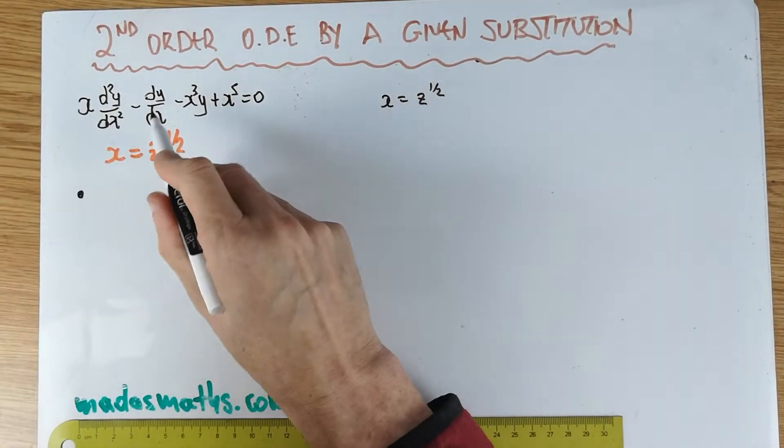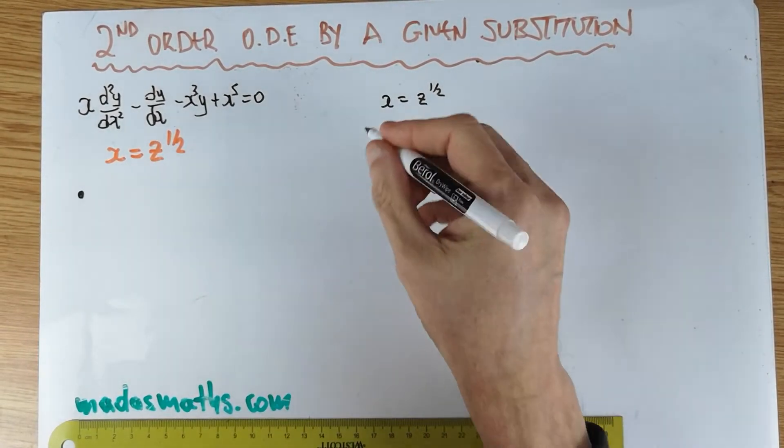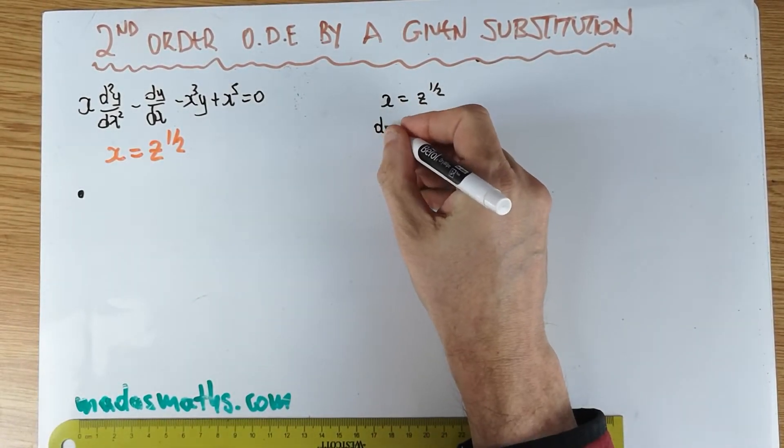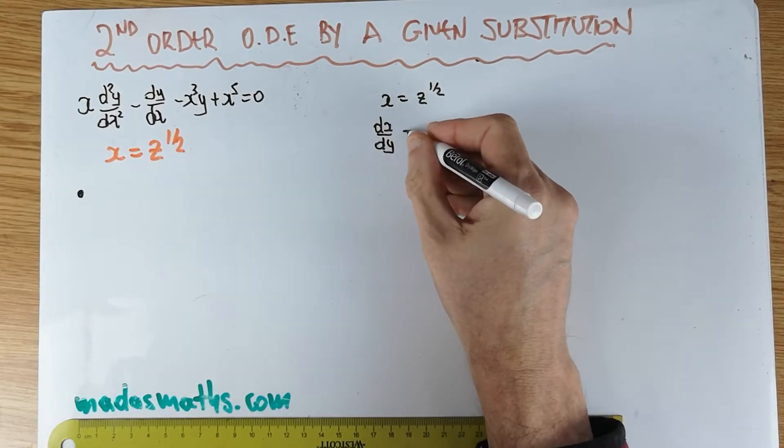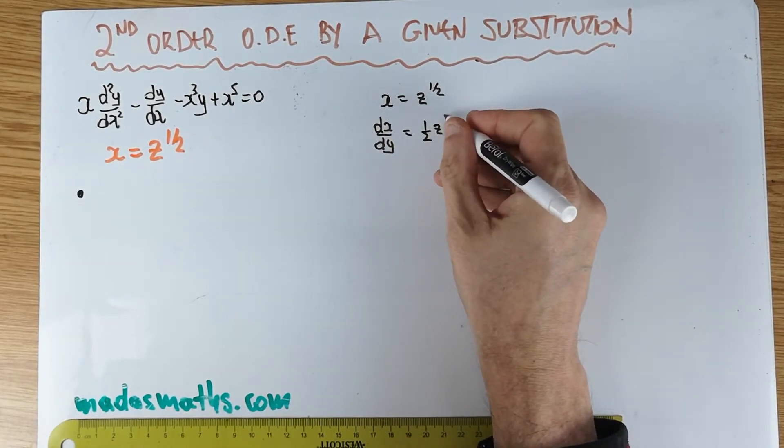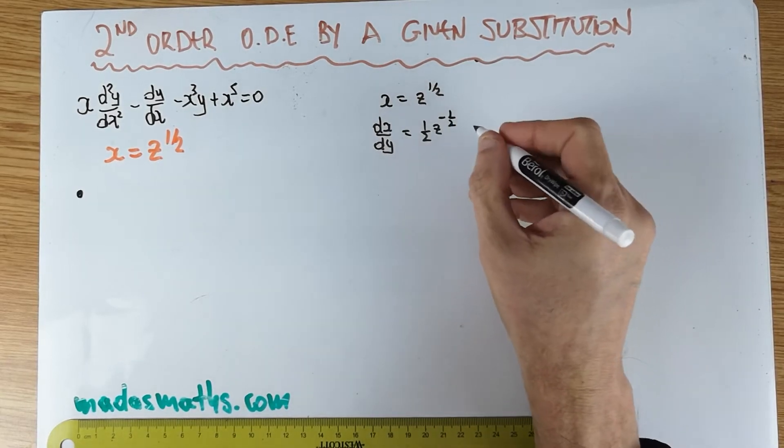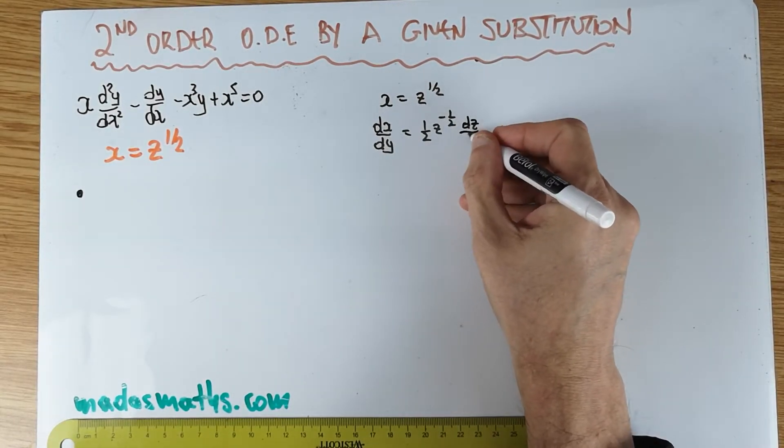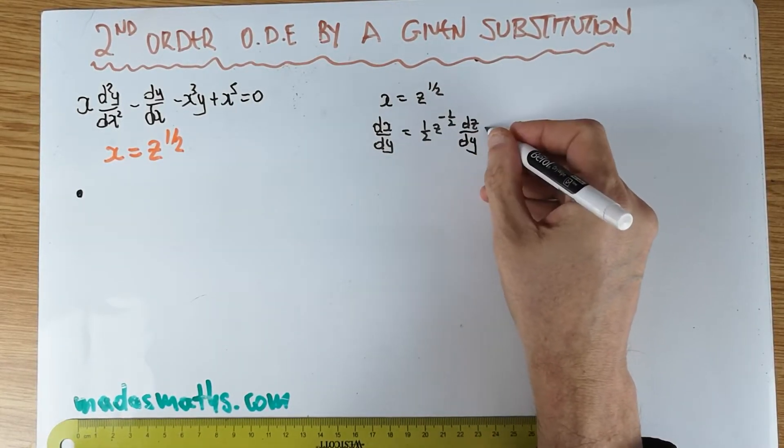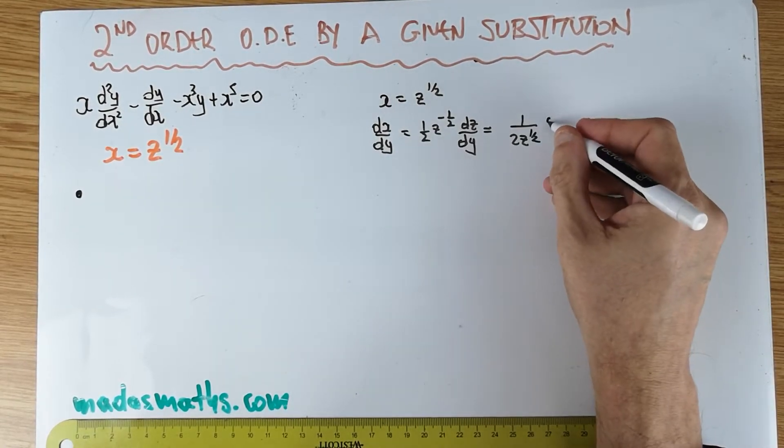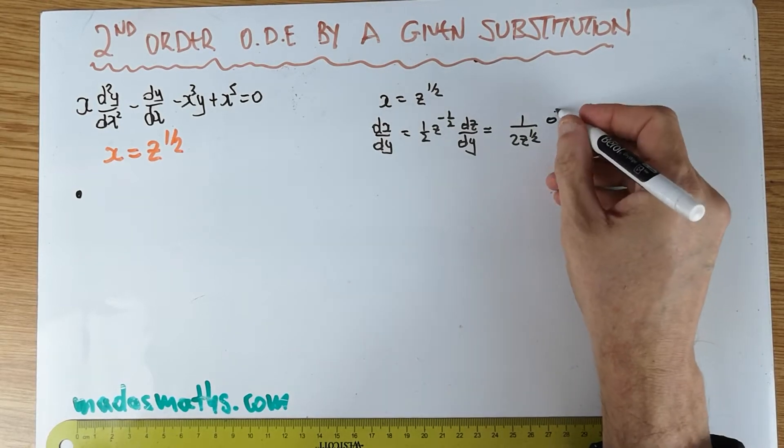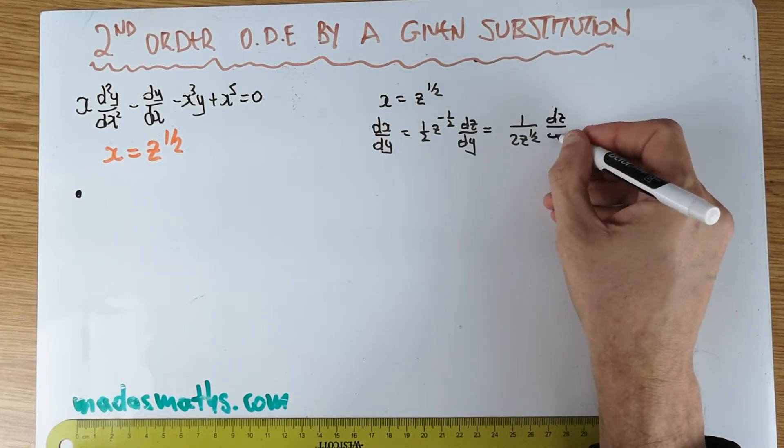We start with the substitution that we have been given. We need dy by dx. How are we going to get dy by dx? We need to differentiate this with respect to y and then flip it. dx by dy is a half z to the minus a half, which is 1 over 2z to the minus a half, and then dz by dy.